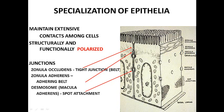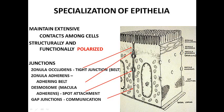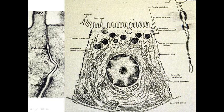We also have spot welds — desmosomes — seen there. The other type of junction is gap junctions. The gap between adjacent cells is uniform because of all the proteins holding their membranes together. The gap junction is associated with communication between cells.